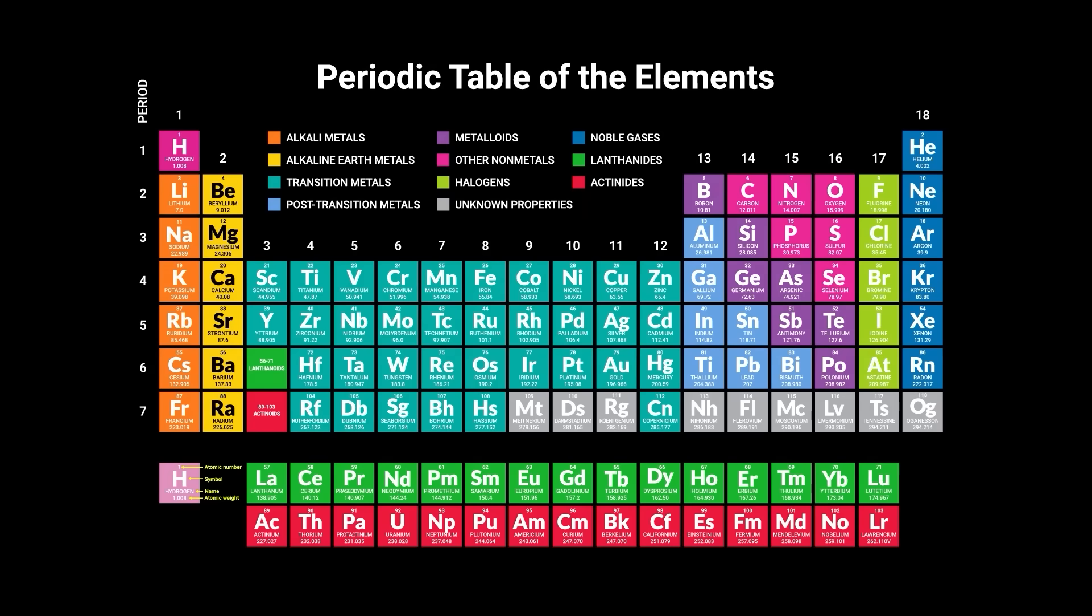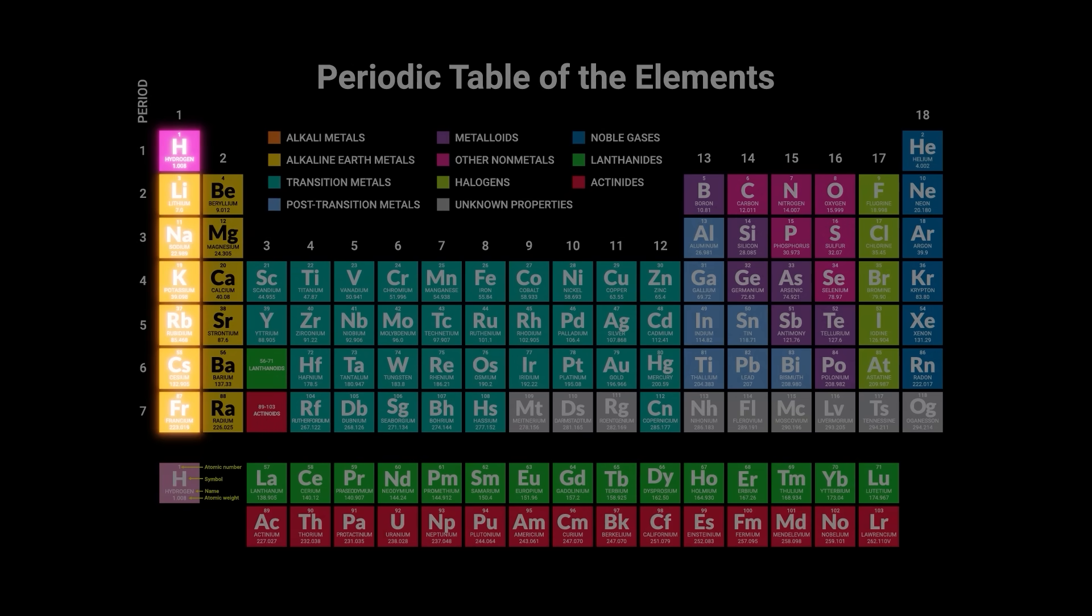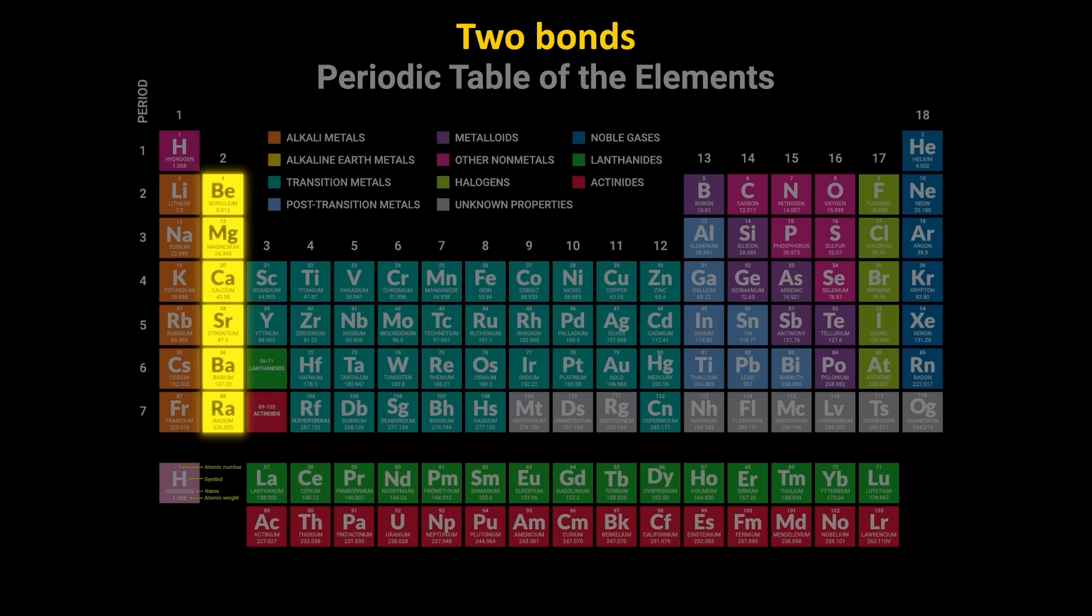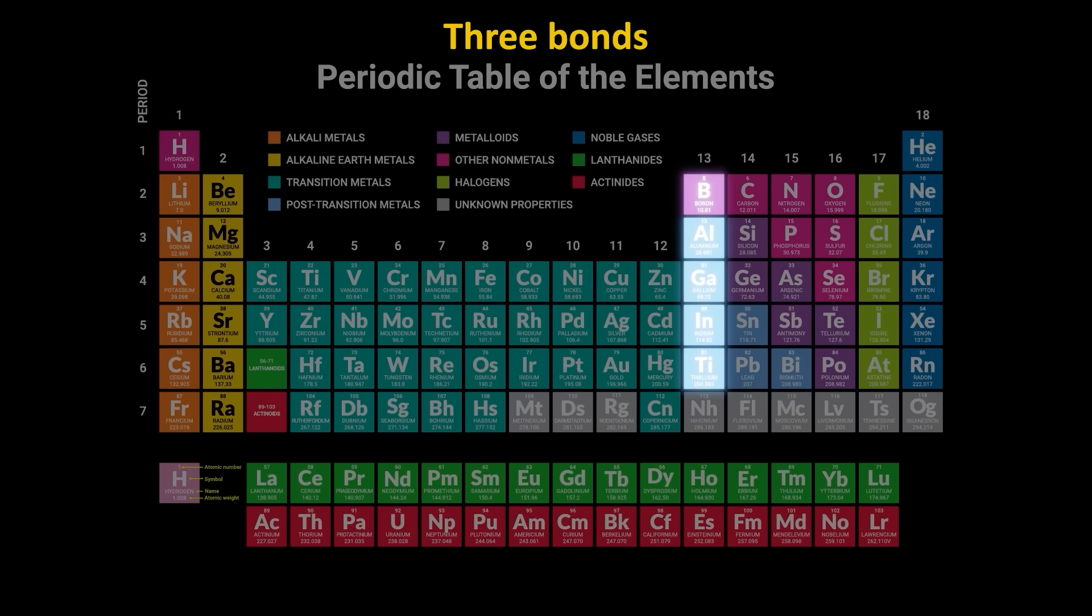The periodic table of elements is arranged so that we can easily tell by column the maximum number of bonds that an element can form. Starting from the left column, the first group of atoms can form a maximum of one bond. The second column can form two bonds. Third column, three bonds. This continues up to the fourth column, which can form four bonds.